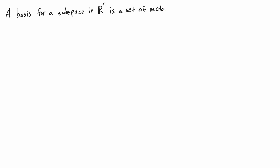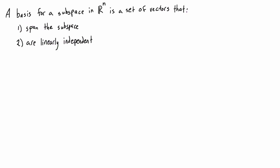So let's first talk about subspaces. A basis for a subspace in Rn is just a set of vectors that spans the subspace and are linearly independent. Basically, a basis is just a minimum set of vectors whose span describes the subspace. And when we're talking about linearly independent, it just means that none of the vectors that form a basis are linear combinations of each other.